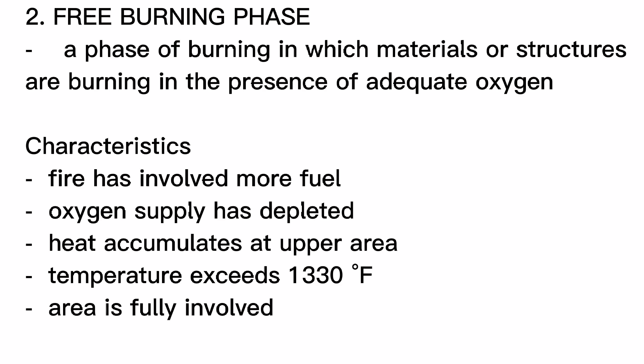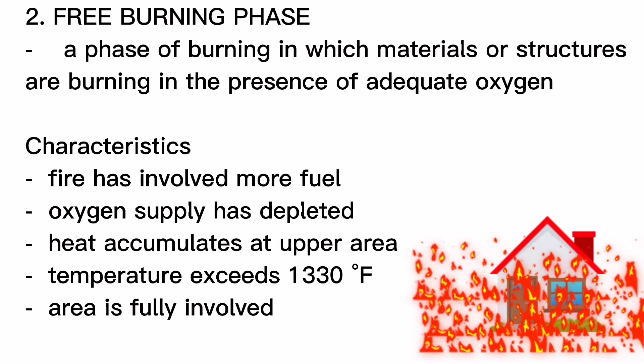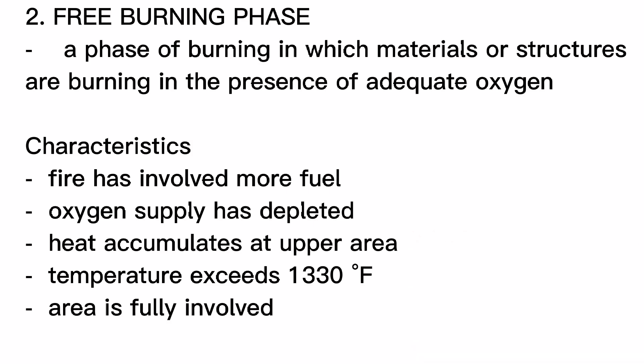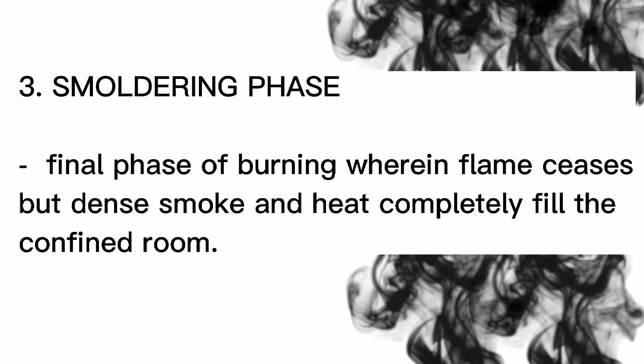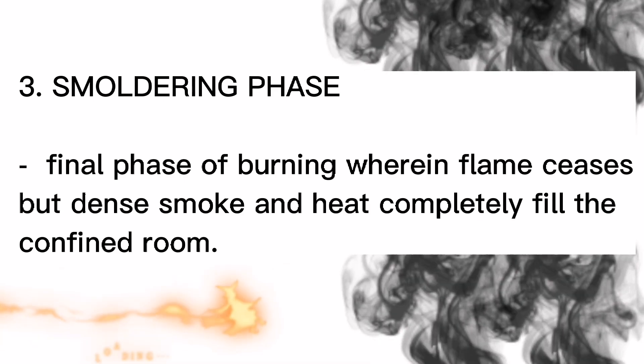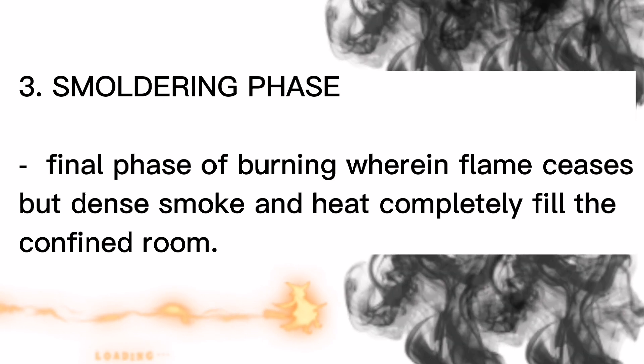Free burning phase — a phase of burning in which materials or structures are burning in the presence of adequate oxygen. Characteristics: fire has involved more fuel, oxygen supply has depleted, heat accumulates at the upper area, temperature exceeds 1,330°F, and the area is fully involved. Smoldering phase — the final phase of burning wherein flame ceases but dense smoke and heat completely fill the confined room.